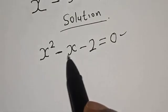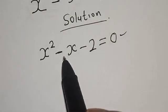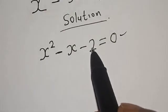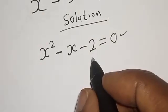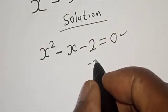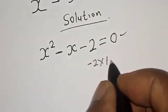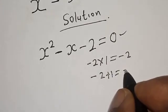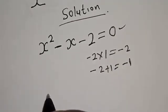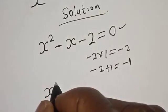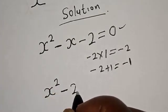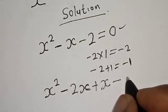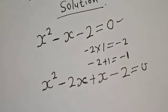In the factorization method, we look for two numbers such that their product gives minus 2 and their sum gives minus 1, because the coefficient of x is minus 1. The coefficient of x squared is 1 and the constant is minus 2. We can use minus 2 and 1: minus 2 multiplied by 1 gives minus 2, and minus 2 plus 1 gives minus 1.